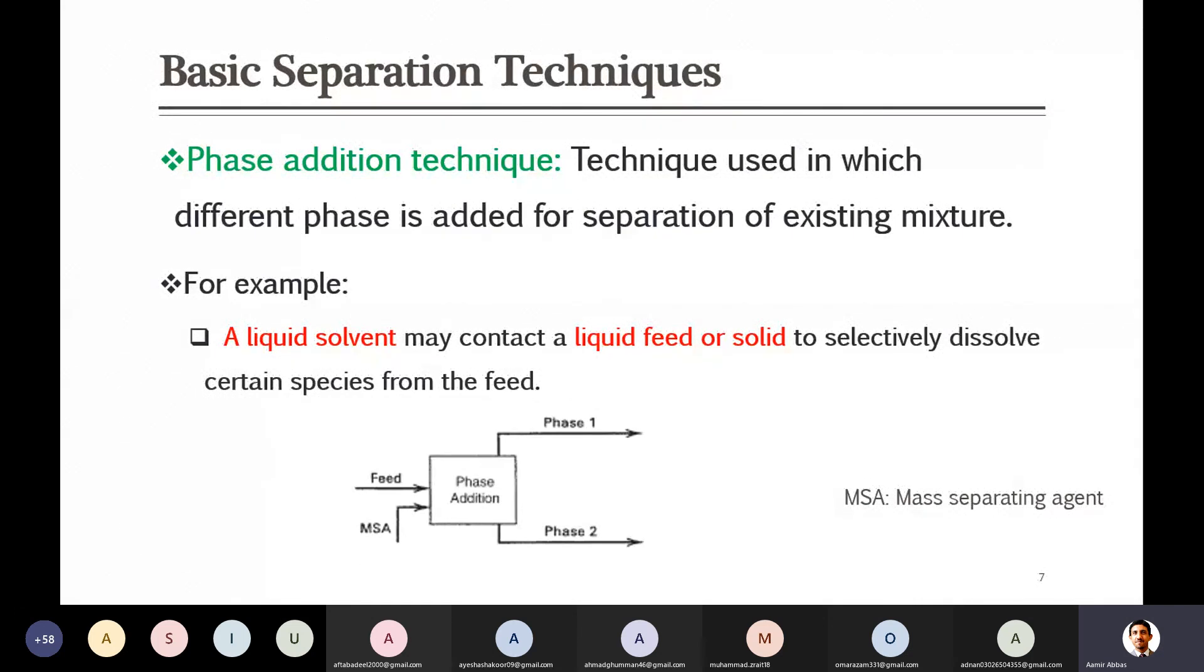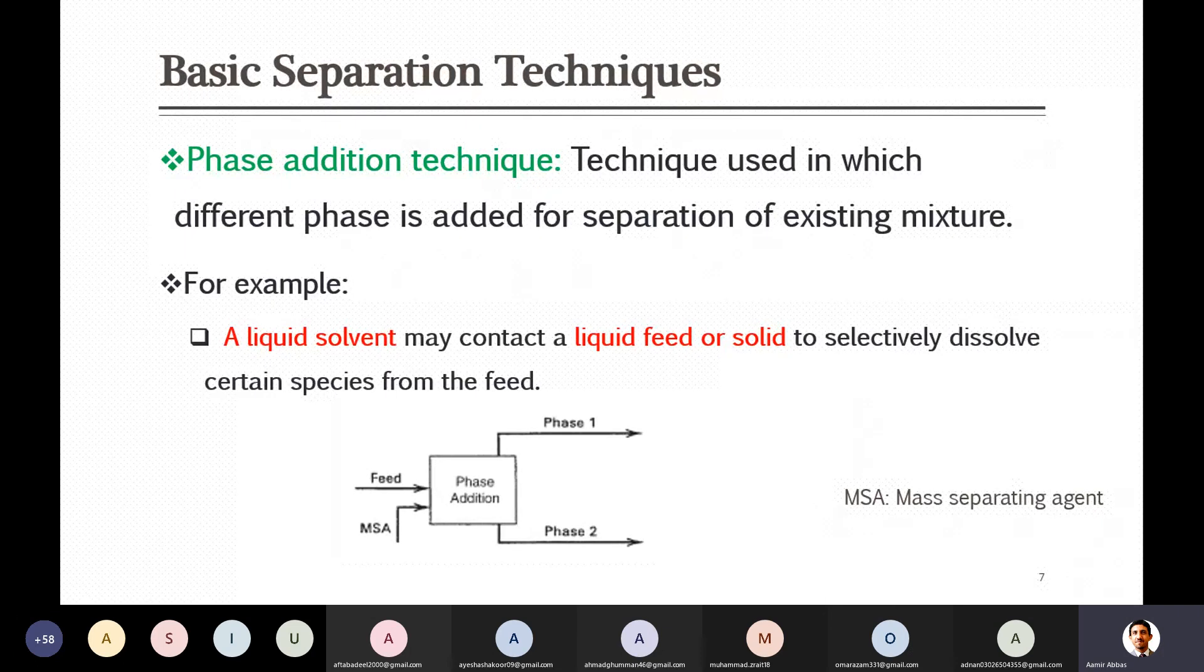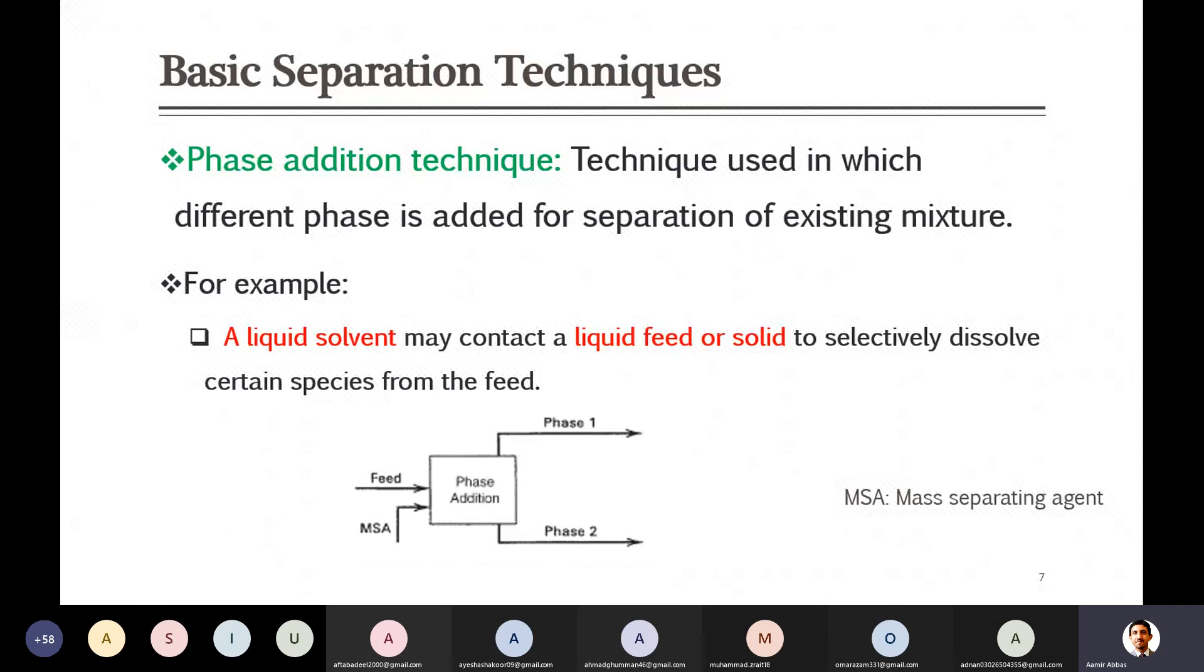Later on you will also see some notation like ESA, means energy separating agent. And this is mass separating agent - MSA. Here we will be bringing some stream of material which will help us to get it separated based on the mass. So can you give any example of this system based on your understanding where you have used it earlier? Is there any example of this? For example, guys - absorb coagulants?